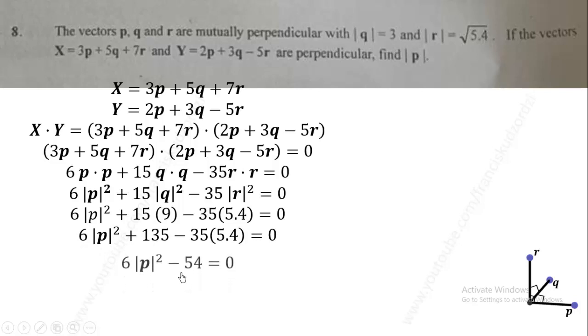This will further simplify to give us something like this. We know that 9 is the same as 3 squared. So it means that magnitude of p squared equal to 3 squared implies that magnitude of p is equal to 3.